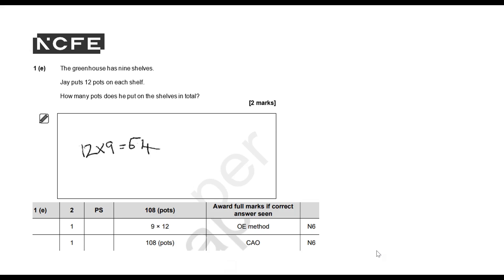1E: The greenhouse has nine shelves. Jay puts 12 pots on each shelf. How many pots does he put on the shelves in total? Two marks available. And here's our learner answer. You can pause the recording now to decide how many marks to award.